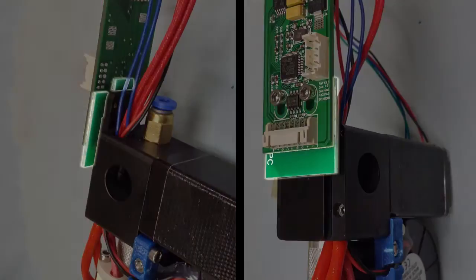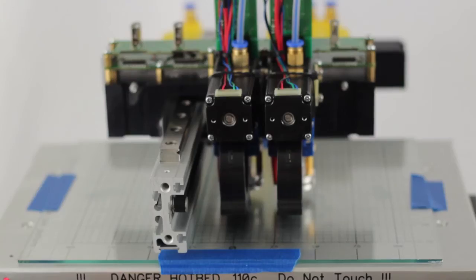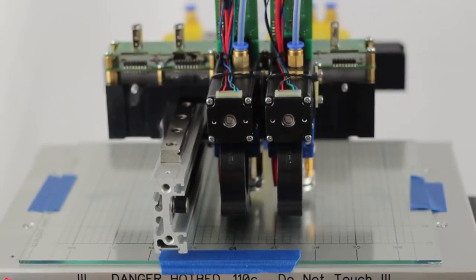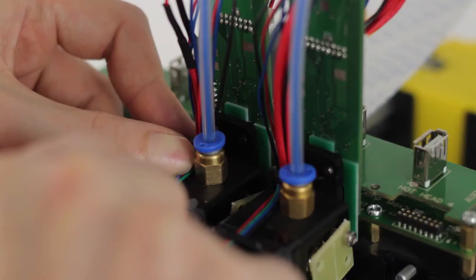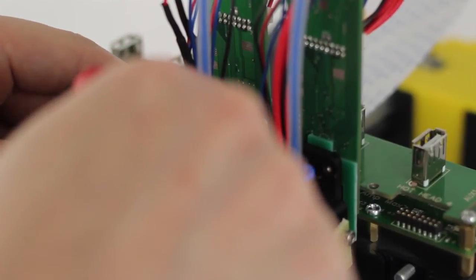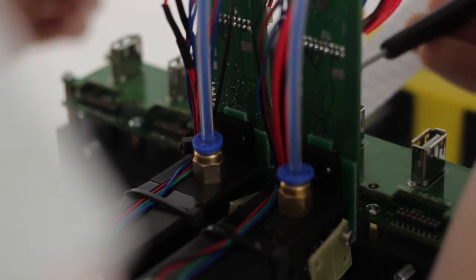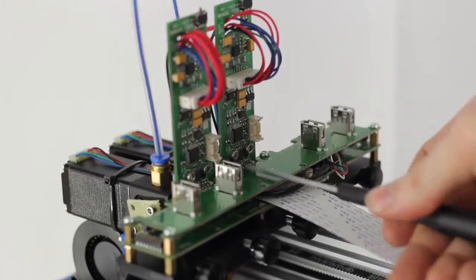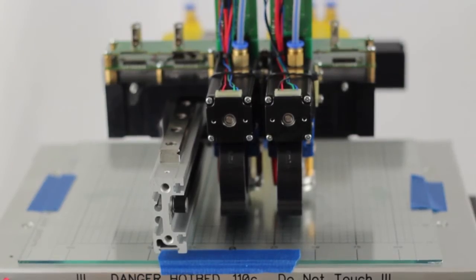Next you will need to set the adjustment block. This will ensure that the head comes to this calibrated position the next time it is installed. Press down on the block until it makes contact with the yoke. Then re-tighten the 2.5mm hex screws. Your MK1s are now calibrated to your machine.